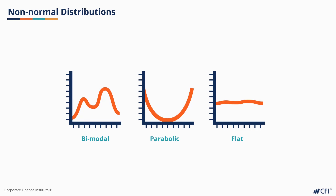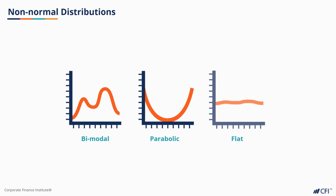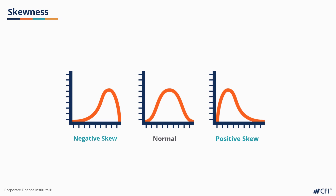Data also comes in distributions that are not normal. It can be bimodal, parabolic, flat, asymmetric, or just about anything. Asymmetric data distributions are common and are often described in terms of skewness. Skewness describes where the data is clumped and where the outliers tend to occur. With negatively skewed distributions, most of the outliers tend to be on the left of the mean, pointing in the negative direction, while most of the data tends to be clumped to the right of the mean. With positively skewed distributions, the outliers tend to be on the right of the mean, with data clumped on the left.